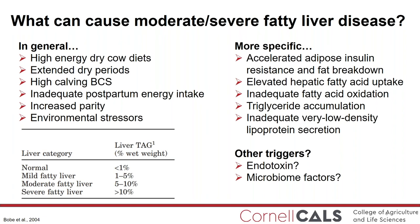Environmental stressors such as overstocking pens and heat stress are also potential contributors. From a mechanistic perspective, the key cause is severe body fat mobilization. Fatter cows mobilize more body fat. Research suggests that these animals experience a greater degree of insulin resistance. The result is an increase in fatty acid uptake by the liver, with a fatty acid profile that mimics adipose tissue. The cow can't oxidize all those fatty acids, so re-esterification occurs and triglyceride accumulates. Another likely contributor is limited secretion of triglyceride within very low-density lipoproteins. Current research is also focused on the role of gut-derived endotoxin and microbial metabolites as triggers of fatty liver disease.